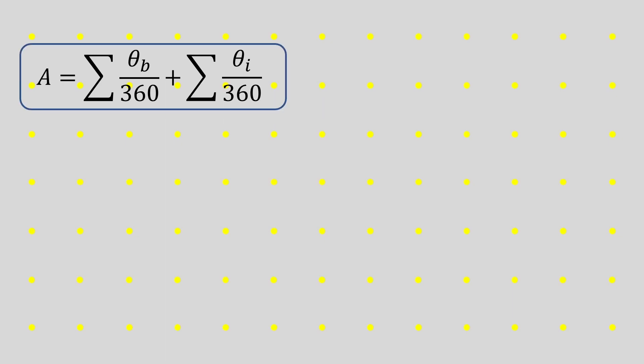To see how this works, let's start with a one by one square. It has four boundary points, each of which is a 90 degree boundary angle. It does not have any interior points, so there are no interior angles, which means the second sum is zero.